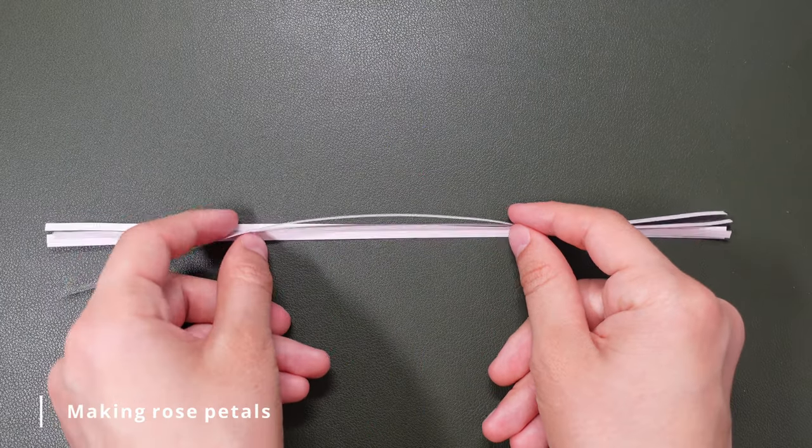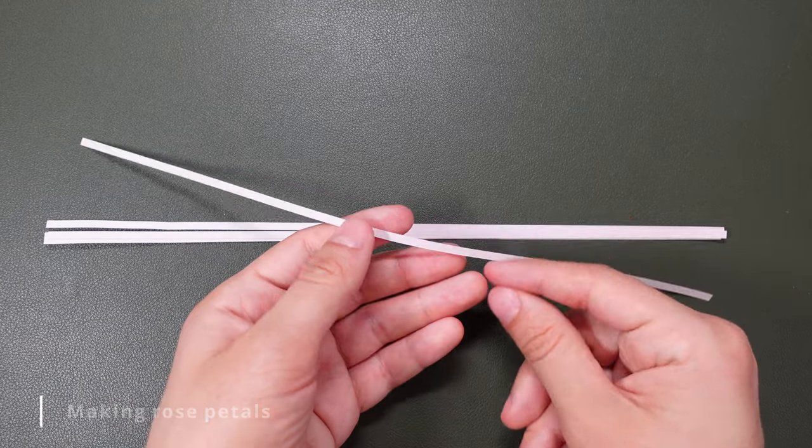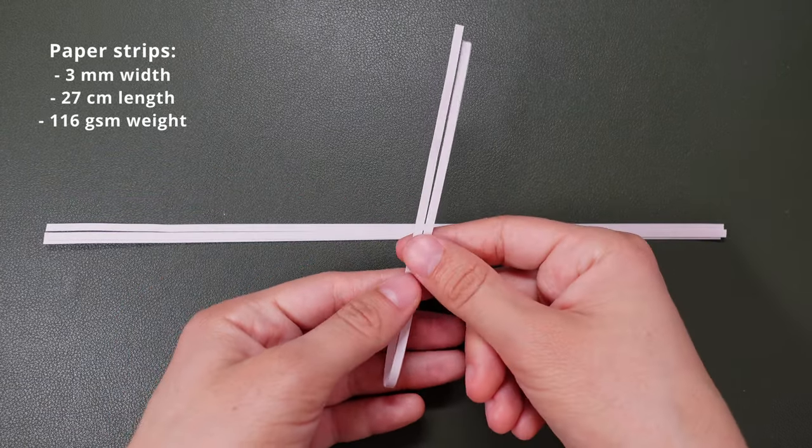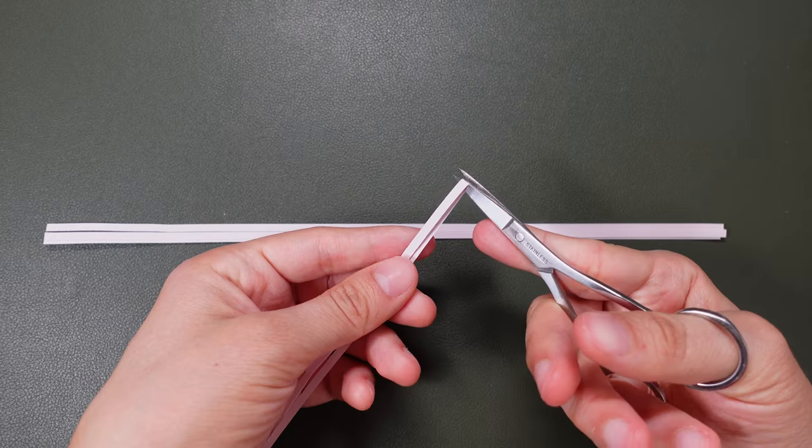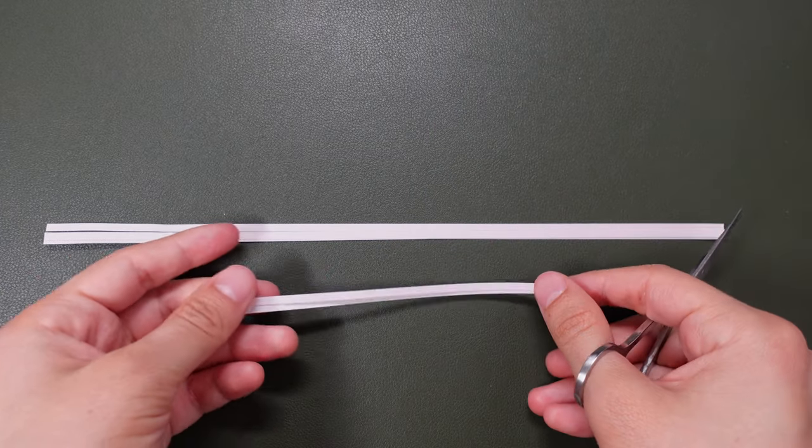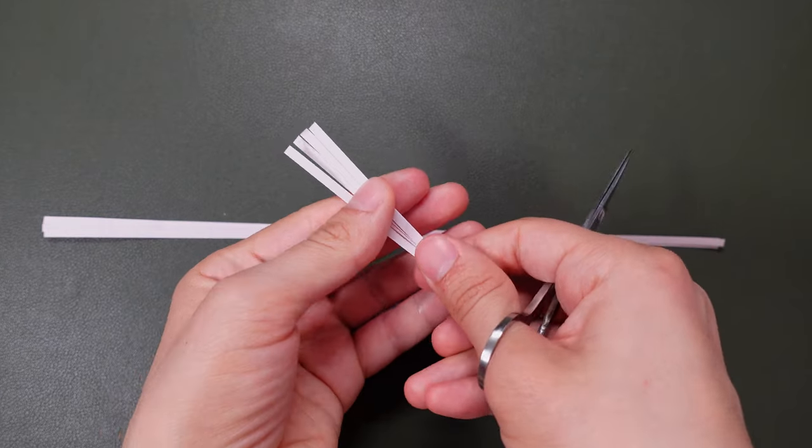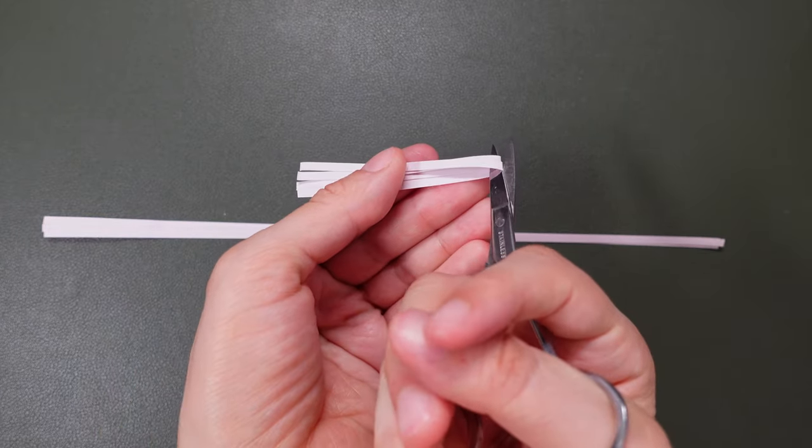I'm going to start by making the petals of the rose and I begin by cutting my paper strips as you can see here. I'm going to cut some of them in half, some in four parts and some in three parts because I'll be working with three lengths of paper strips in order to make three sizes of petals. You will see that in just a little bit.